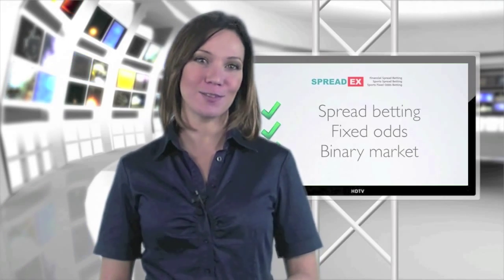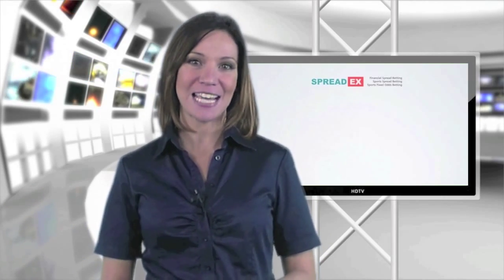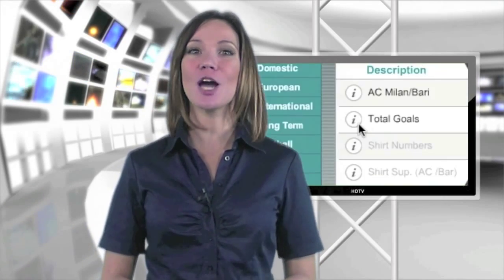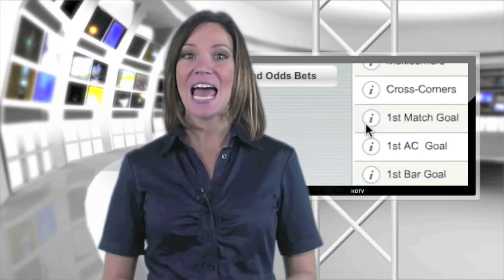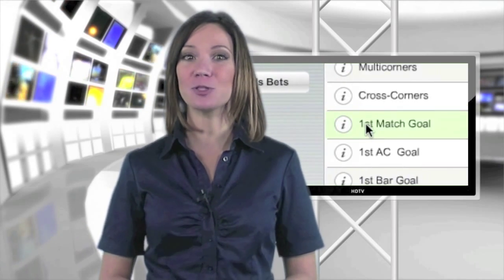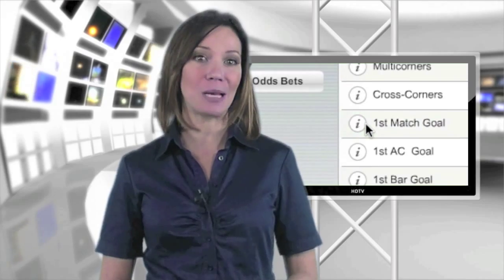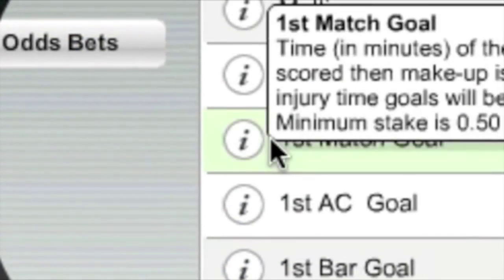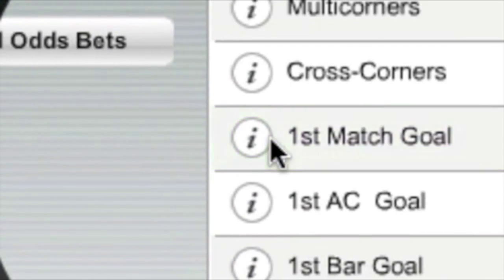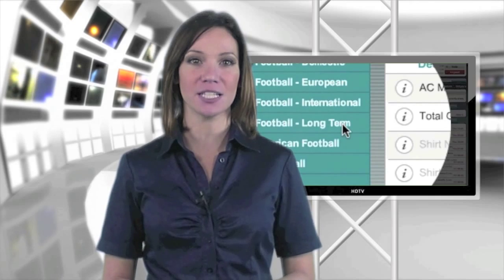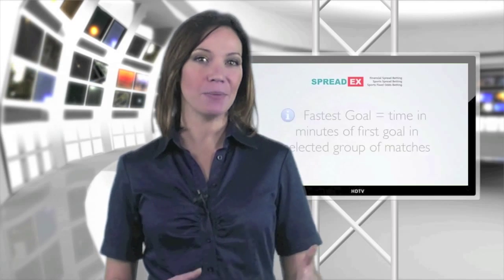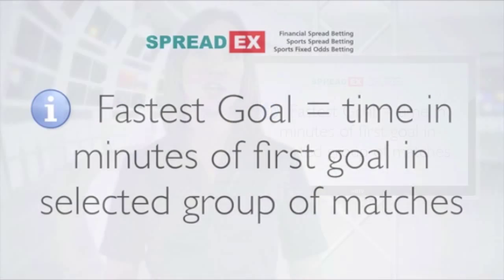You can bet on dozens of game details, including the total number of goals, the number of corners, the time the first goal will be scored, and how many goalscoring minutes each player will have. You can also spread bet over groups of games with the likes of fastest goal — the time and minutes of first goal in selected groups of matches.